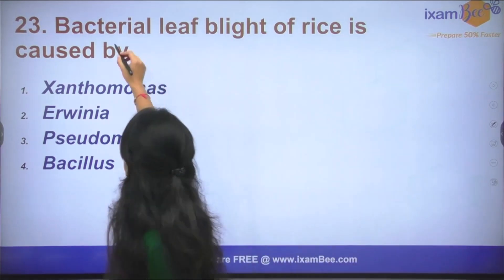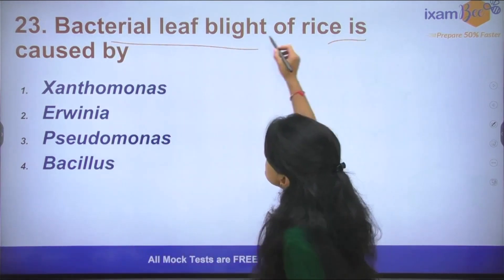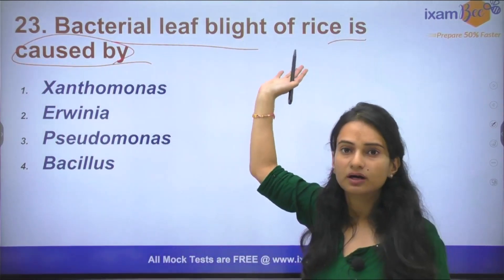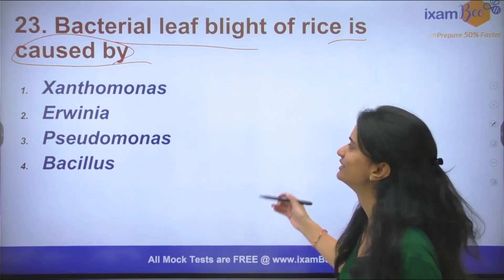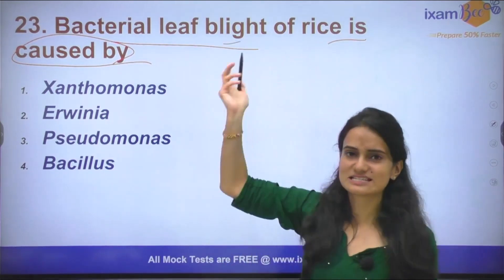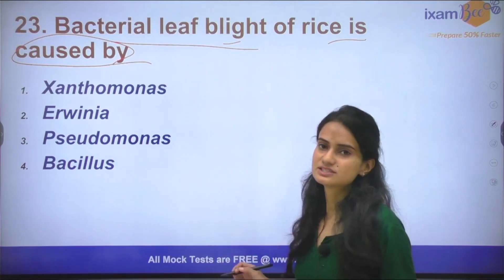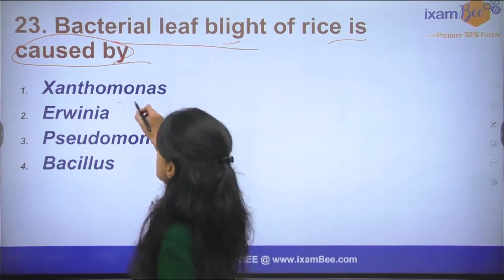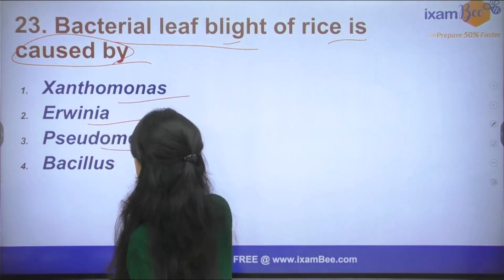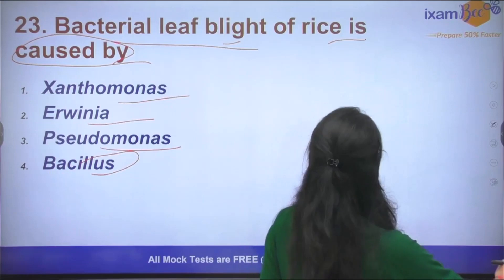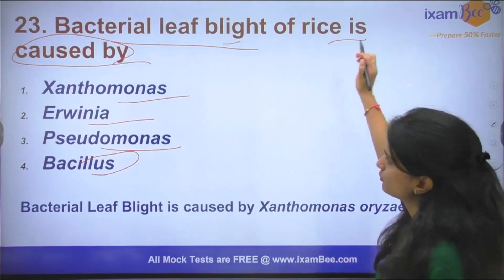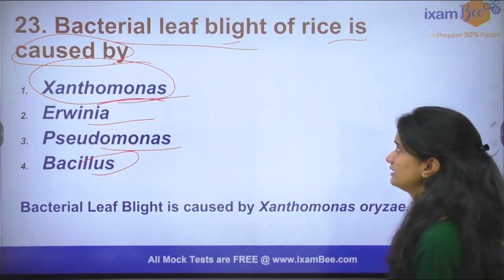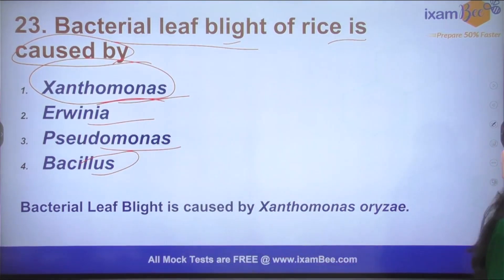The next question: Bacterial leaf blight of rice is caused by which organism? It is one of the major diseases in rice. The options are Xanthomonas, Erwinia, Pseudomonas, or Bacillus. The answer is Xanthomonas — Xanthomonas oryzae is the causal agent of bacterial leaf blight (BLB) of rice.